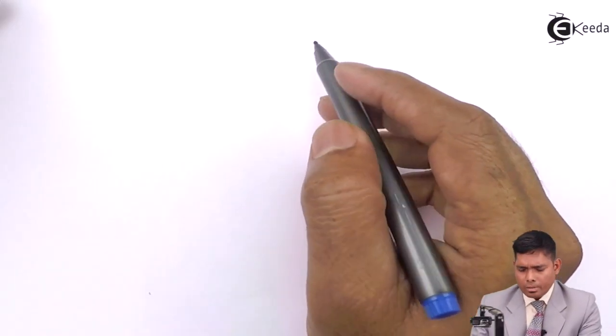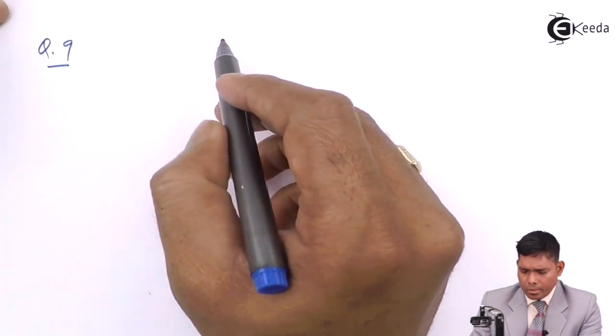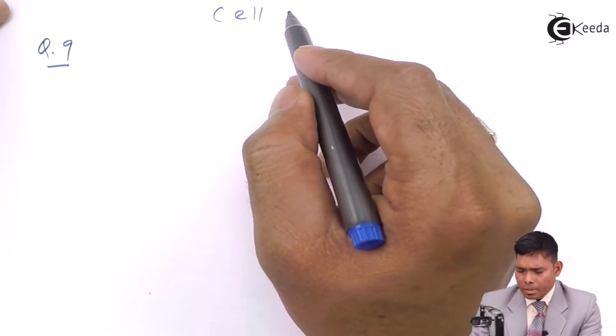We will take combination of cell numericals. Question number 9, numericals on cell combinations.